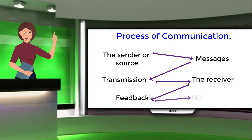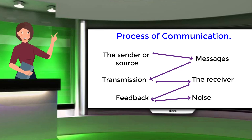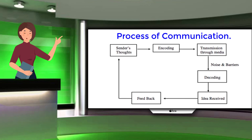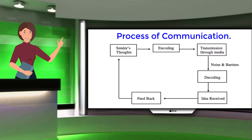The last element is noise. For a communication to be successful, it must be free from noise. Noise in communication theory refers to any limitation or obstacle in the process of message transmission. The process can be summarized as: sender's thought, then encoding, then transmission through media, crossing the noise and barriers, then decoding is done, then the idea is received, then feedback is obtained.